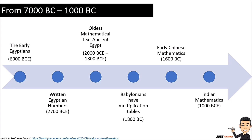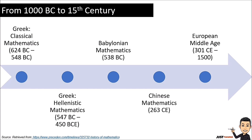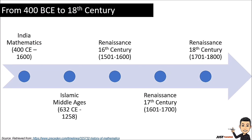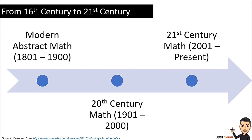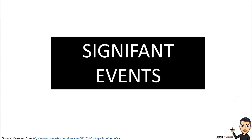We can see the early Egyptians, their written numbers, their oldest mathematical text, the Babylonian multiplication table, the early Chinese mathematics, and the Indian mathematics. Proceeding to 1000 BC to the 15th century, we have the Greek classical mathematics, the Greek Hellenistic mathematics, the Babylonian mathematics, the Chinese mathematics, and the European Middle Ages. From 400 BC to the 18th century we can see Indian mathematics, the Islamic Middle Ages, the Renaissance, 16th century, 17th century, and 18th century. From the 16th century to the 21st century we can see modern abstract math, 20th century math, and 21st century math. Now let's proceed to the significant events from those periods.